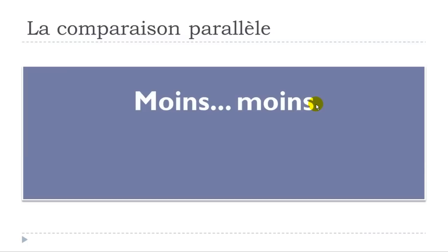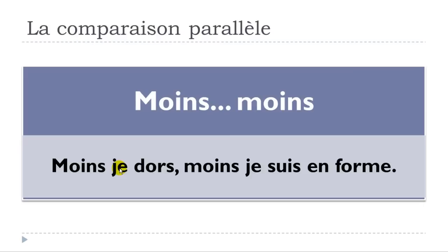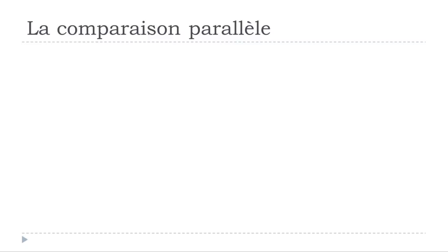For MOINS ET MOINS — less and less — the structure is exactly the same: MOINS JE DORS, MOINS JE SUIS EN FORME — the less I sleep, the less I am in good shape. Don't forget the virgule to separate the two parts.